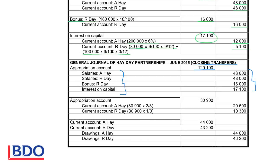We take the total profit and subtract $129,100 from $160,000, leaving $30,900. All the money must be distributed between the partners. We share the $30,900 according to the profit-sharing ratio — two-thirds and one-third — so Ai Hai gets $20,600 and Day gets $10,300. The debit side of the appropriation account, covering all expenses and the divided profit, must add up to the total profit of $160,000.